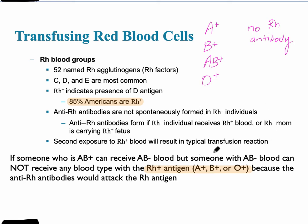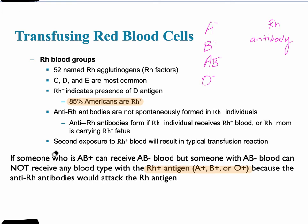On the opposite end, if someone is any RH negative blood type, they would not be able to receive RH positive blood because they have the RH antibody, and that antibody would attack the RH positive cells. So it's important to remember that someone with AB positive blood can receive AB negative, but not the other way around.